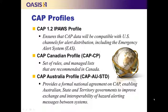As CAP continues to gain international recognition, profiles have been developed to constrain the standard and meet particular needs. The CAP 1.2 IPAWS profile ensures that CAP data will be compatible with US channels for alert distribution. Similarly, the CAP Canadian profile, known as CAP-CP, defines a set of rules and managed lists recommended in Canada. This profile also addresses Canada's need for multi-language service. The CAP Australian profile meets the needs of Australian state and territory governments to exchange hazard alerting messages between various systems.